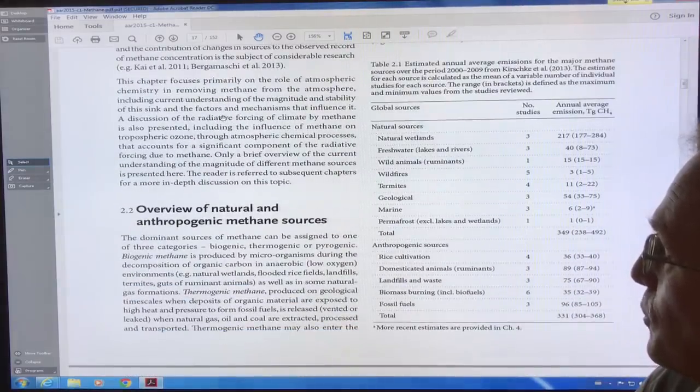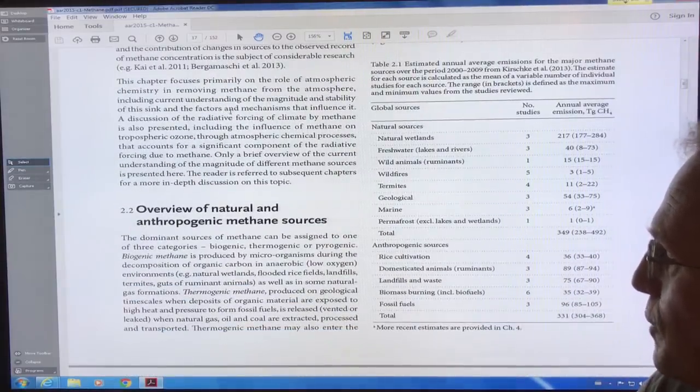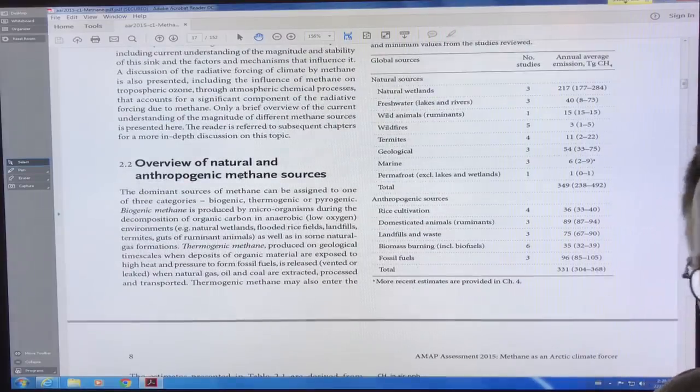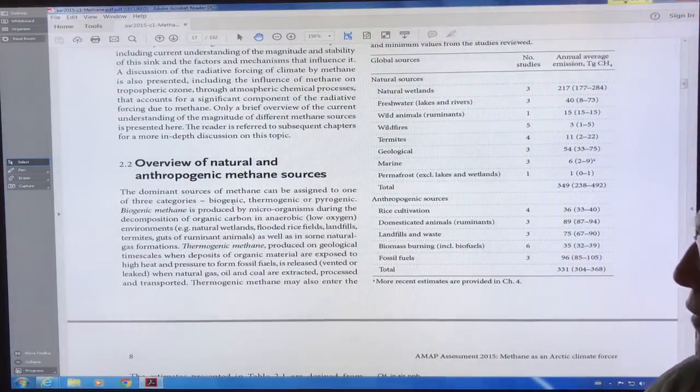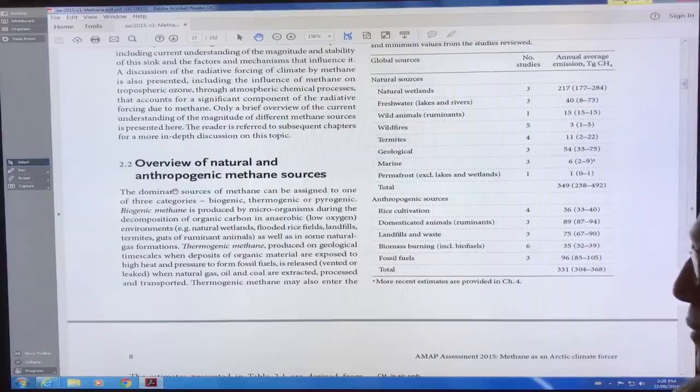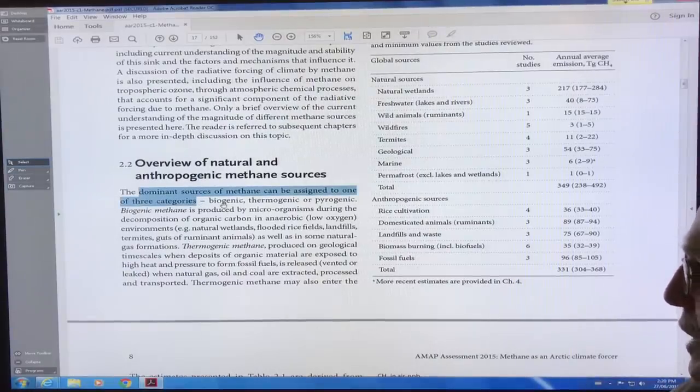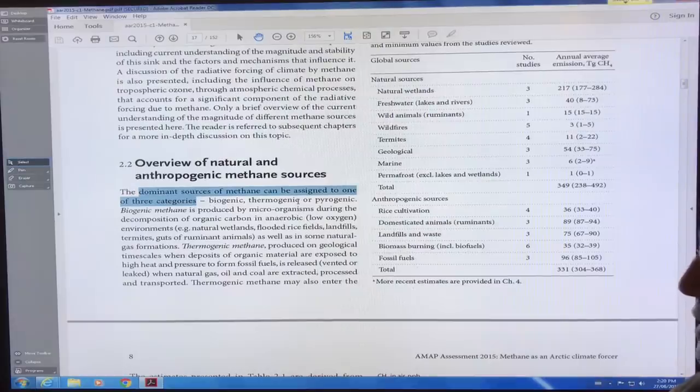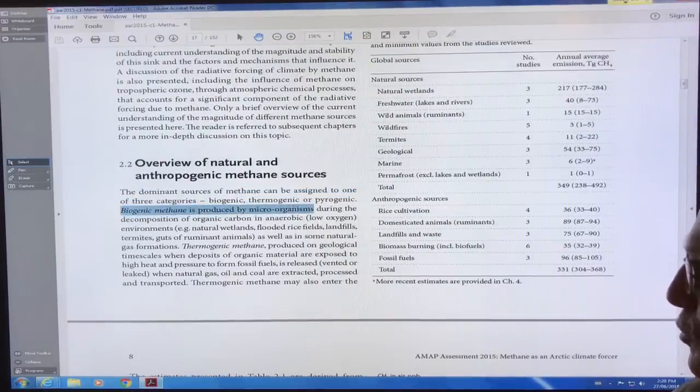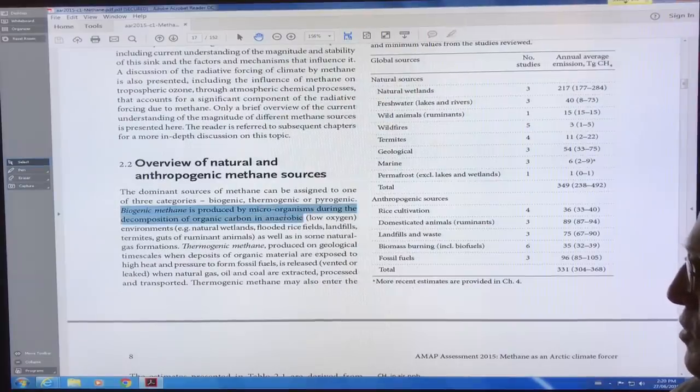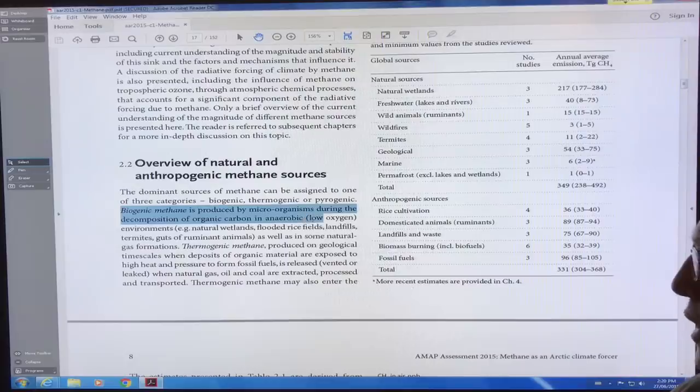The stability, magnitude of the sink and the mechanisms that affect it. So first of all, there's three different, the dominant sources of methane, there's three categories: biogenic, thermogenic, and pyrogenic. So biogenic methane is produced by microorganisms during the decomposition of organic carbon in anaerobic, low oxygen environments.